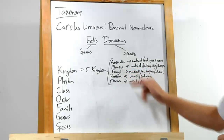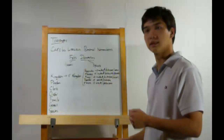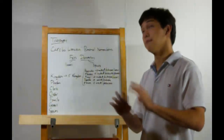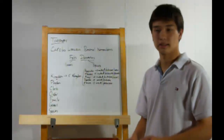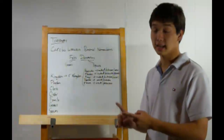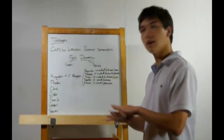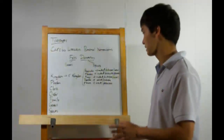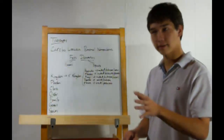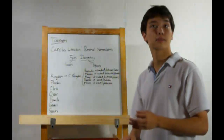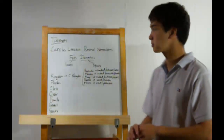Protista — these are the unicellular eukaryotes. How they get their food? Many different ways. Some are photosynthetic, some are not. Some produce chemicals — all sorts of different ways to get their food. And finally, Monera — the unicellular prokaryotes.